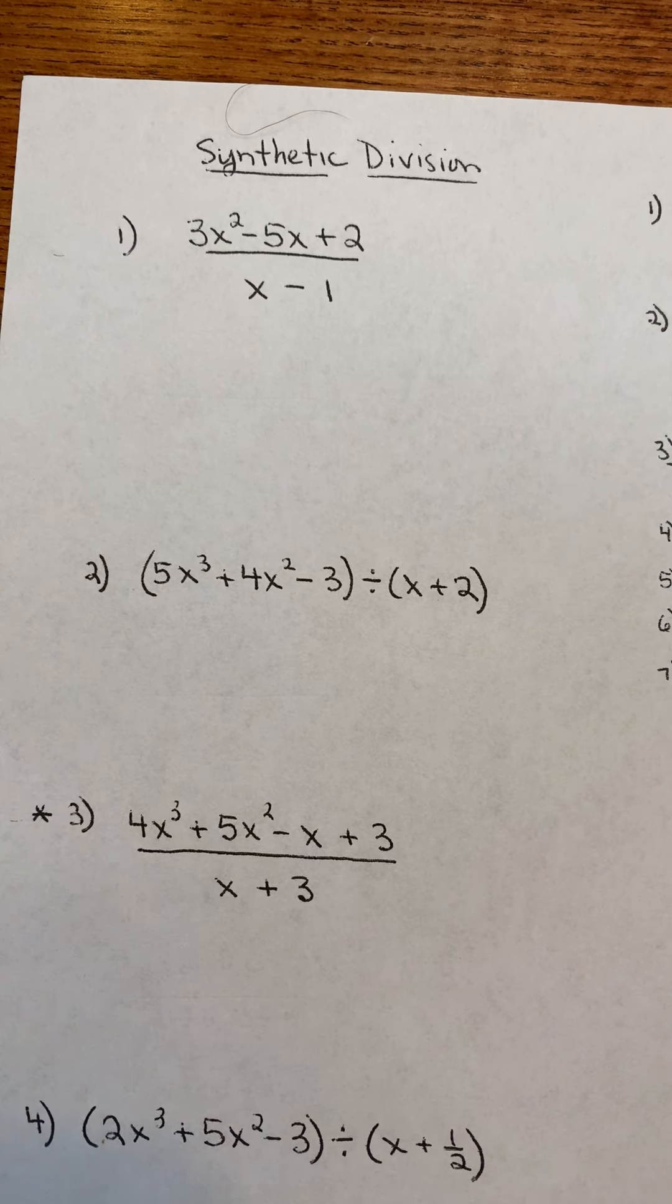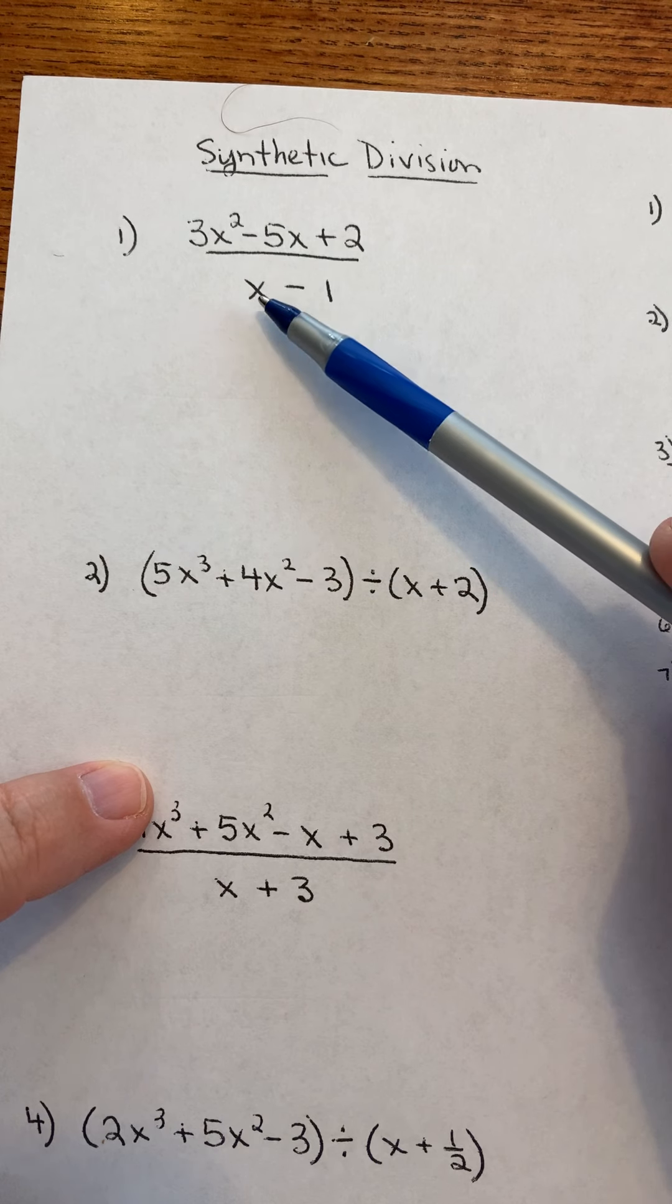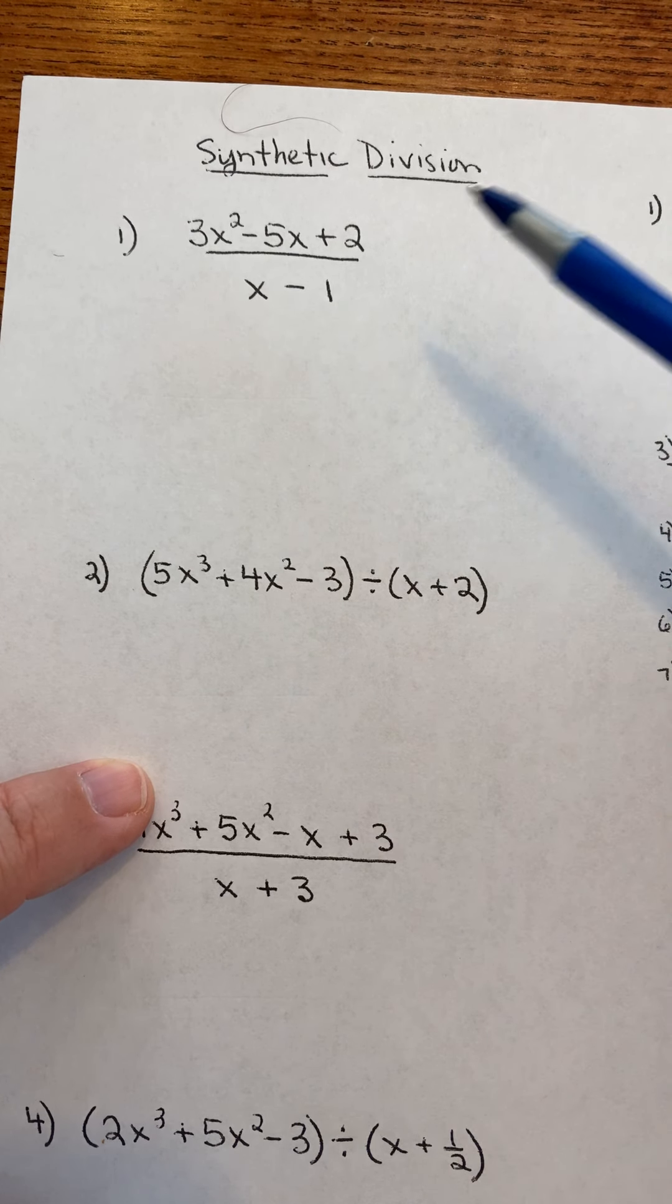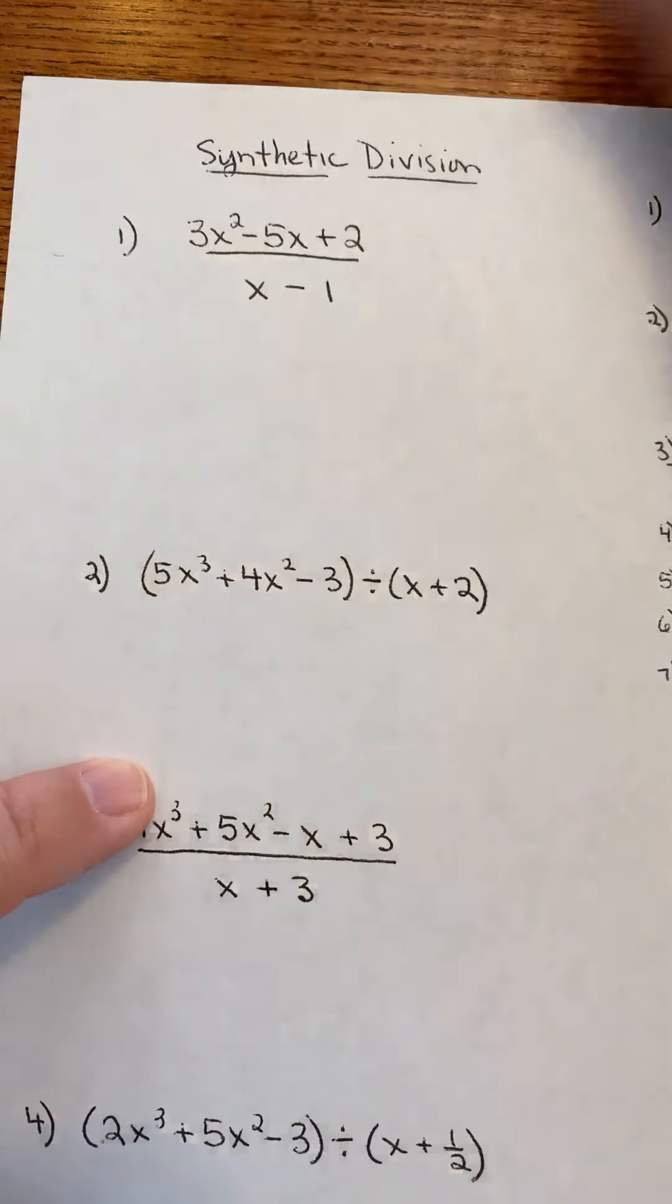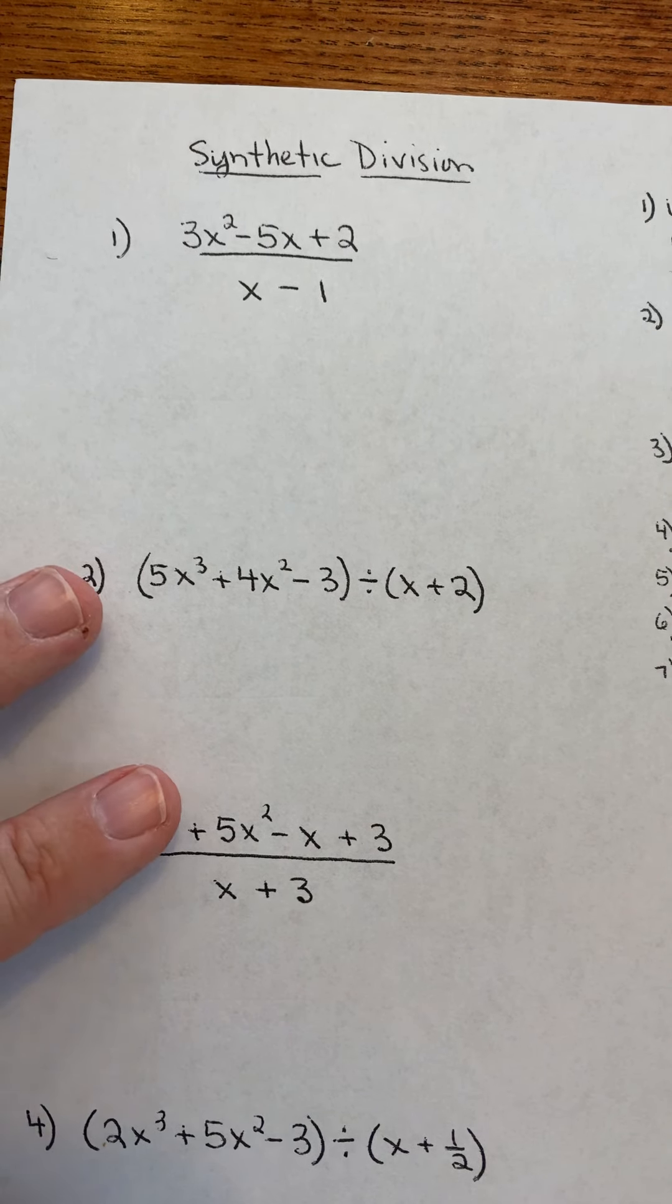All right, so I could use long division, but I'm going to show you a method we can use when you're dividing by a binomial, a linear binomial. That means the exponent has to be a 1 there. You can't use synthetic division if that's an exponent that's higher.